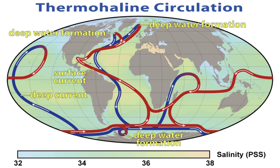Chemical oceanography is the study of the chemistry of the ocean. Whereas chemical oceanography is primarily occupied with the study and understanding of seawater properties and its changes, ocean chemistry focuses primarily on the geochemical cycles. The following is a central topic investigated by chemical oceanography.